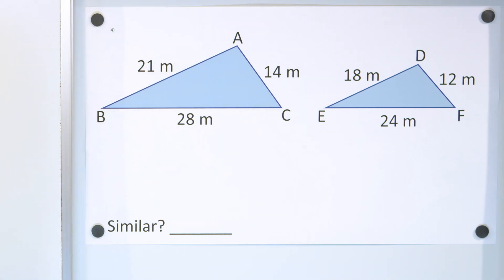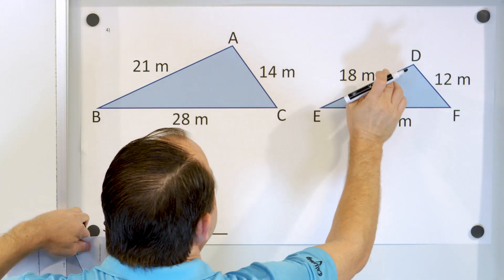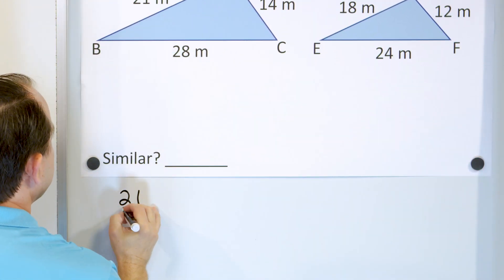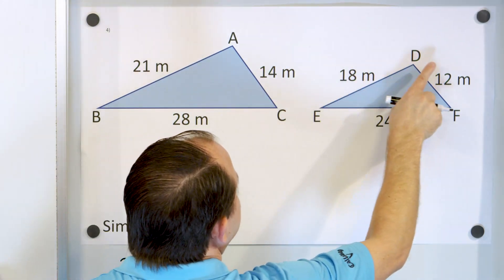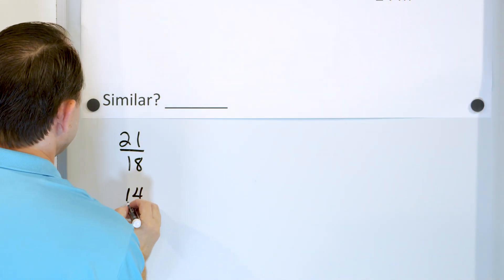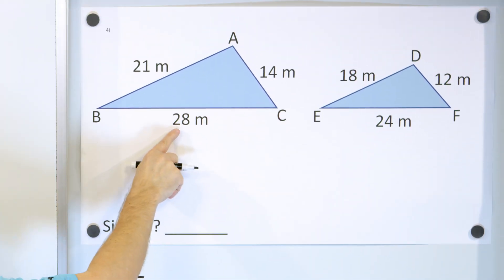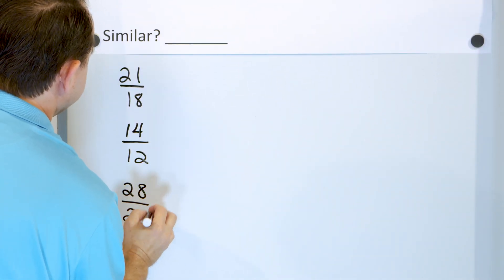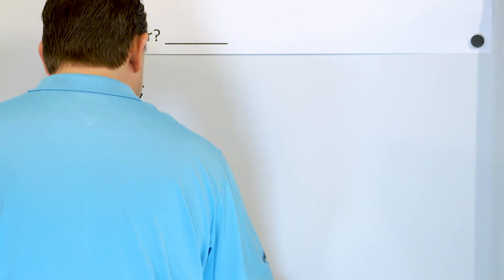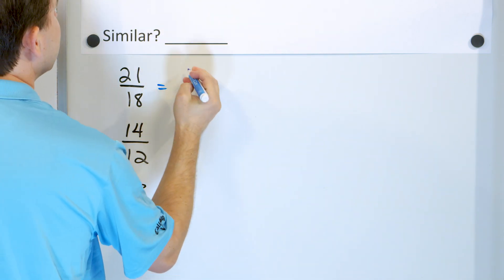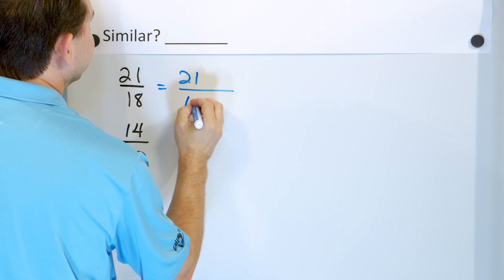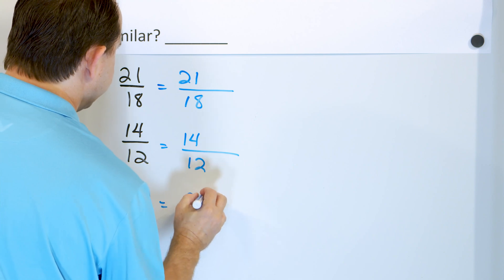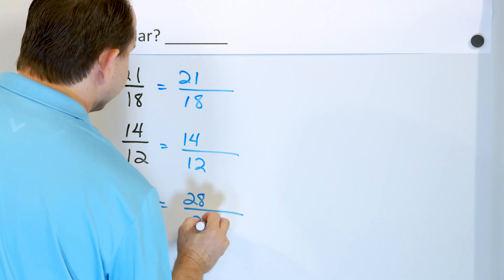Let's look at our last problem. Triangle 1 and triangle 2. We compare 21 divided by 18, then 14 divided by 12, and then 28 divided by 24.